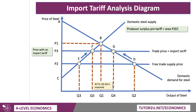Some of that lost consumer surplus has gone to the producer. Focusing on domestic steel producers: before the tariff, at the low price P2, their surplus was area P2-E-C — just that small triangle. As a result of the tariff, they can now produce more and get a higher price for their steel, so post-tariff producer surplus is area P3-F-C. The area P3-F-E-P2 has transferred from consumer to producer.